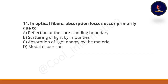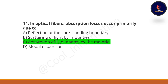Next question: In optical fibers, absorption losses occur primarily due to what? Option A: reflection at the core-cladding boundary. Option B: scattering of light by impurities. Option C: absorption of light energy by the material. Option D: modal dispersion. The correct option is C — absorption of light energy by the material.